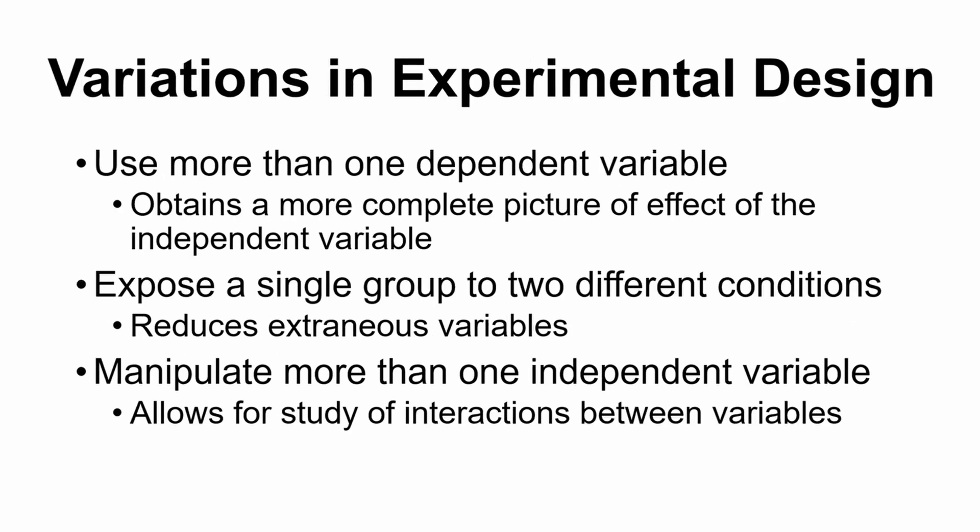When we started talking about experiments, I mentioned we would be looking at the simplest version first: one manipulated variable, one measured variable. But of course there are always ways to modify this. First, we could look at more than one dependent variable — more than one measured variable.